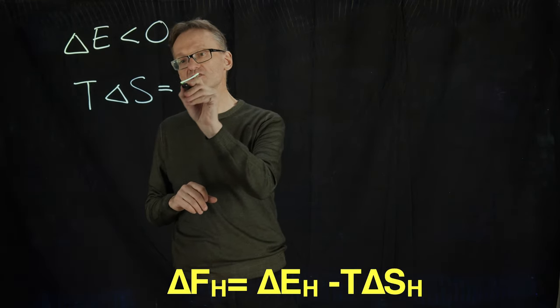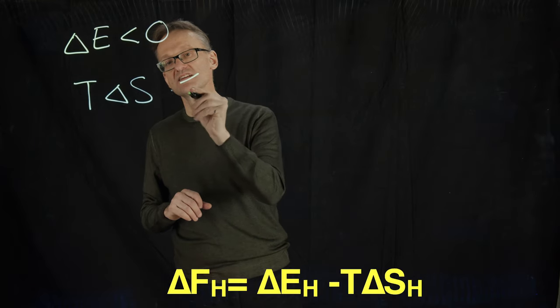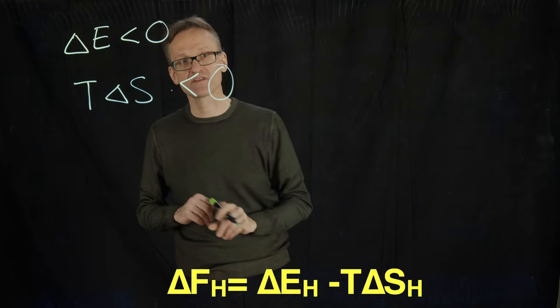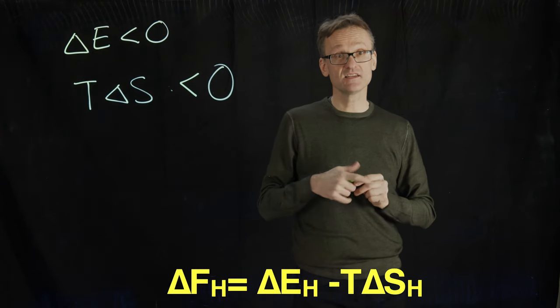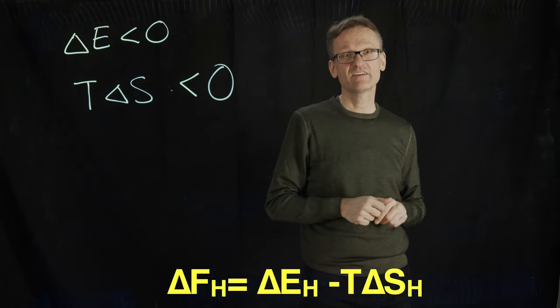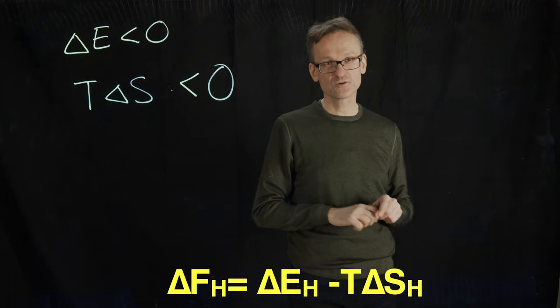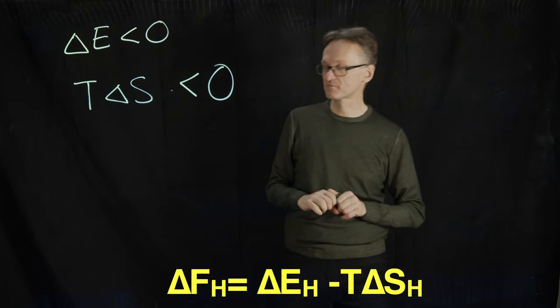So T delta S is also smaller than zero, and you're going to see that for most things you look at, actually, these two terms tend to have the same sign. If they are different signs, the world would be trivial and you could guess instantly what's going to happen or not.